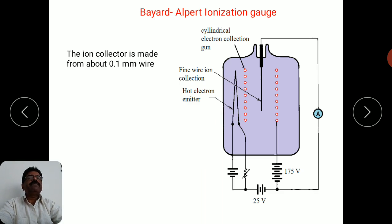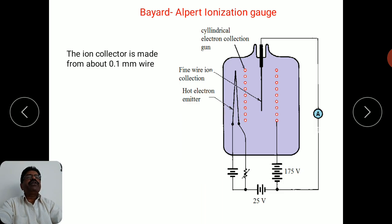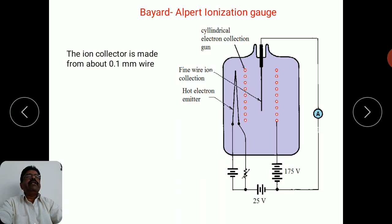The filament is kept outside. The advantage is that the electrons, once emitted, travel through the spaces towards the cylindrical electron collection gun and undergo collisions with the gas molecules, causing ionization. The possible chances of electrons striking the electrode without collision and producing X-rays have been tremendously reduced. That is the advantage of having the filament outside.